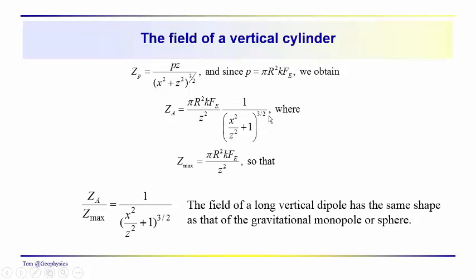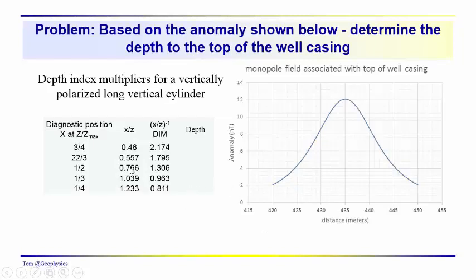And it's multiplied times this term, which we're referring to as the shape term because it describes the shape of the anomaly. If we take a look at the ratio of z sub a at any point x to z max, we just have one over x squared, one over the quantity x squared over z squared plus one to the three halves power. So the field of this long vertical dipole has the same shape as that of the gravitational monopole or the sphere. So we should end up with the same diagnostic positions, and we do.